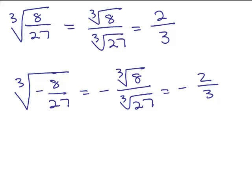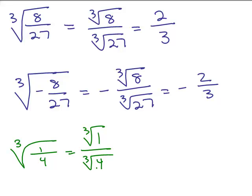How about if we had a problem like this, the cube root of 1/4. Well, you could do the cube root of 1 over the cube root of 4, but now cube root of 4 is not a perfect cube, so you can't do it like that.